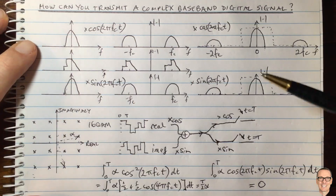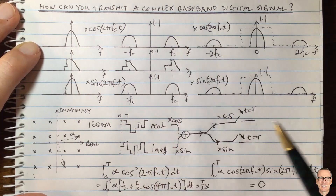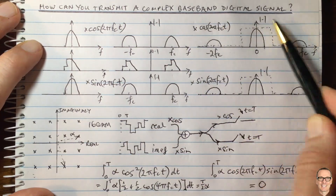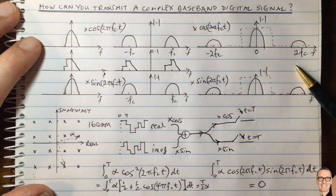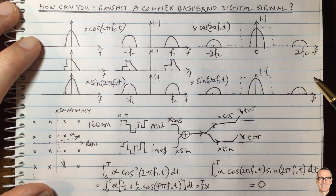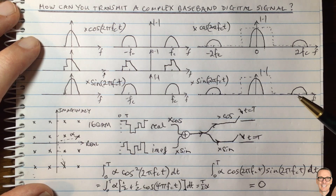You couldn't just send a complex baseband digital signal directly with traditional single-carrier modulation, but using quadrature carrier modulation, you can reconstruct the original signal — you can transmit a complex baseband digital signal even though it's not a real signal and doesn't really exist as such. Hopefully this video has given you more insight into what complex baseband means and how you transmit digital signals. Give it a thumbs up, subscribe to the channel for more videos, and look in the description for links to other videos and a fully categorized listing of all videos on the channel.